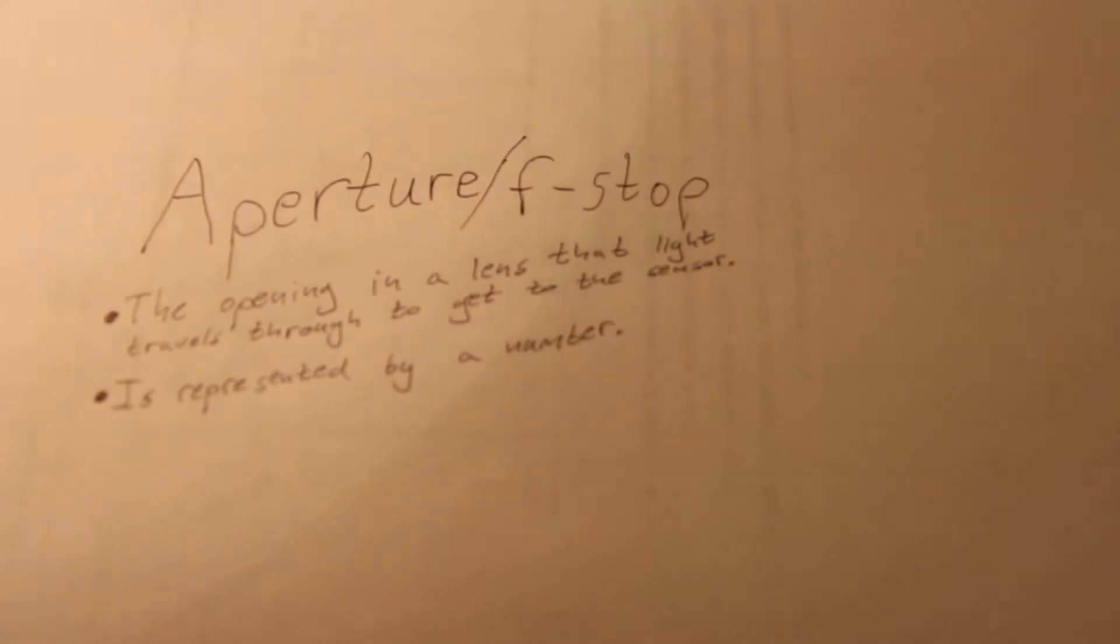Number two, aperture or f-stop. Aperture is the opening that light travels through to get to the camera sensor. Aperture is represented by a number. The lower the f-stop number, the larger the opening. The higher the f-stop number, the smaller the opening.